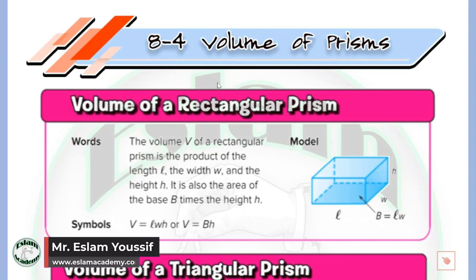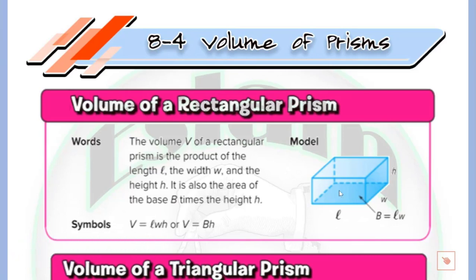First, what is the meaning of the prism? The prism is a three-dimensional shape that has two bases opposite to each other. The two bases are parallel and congruent. Parallel means they will never intersect. Congruent means the same size with the same shape.